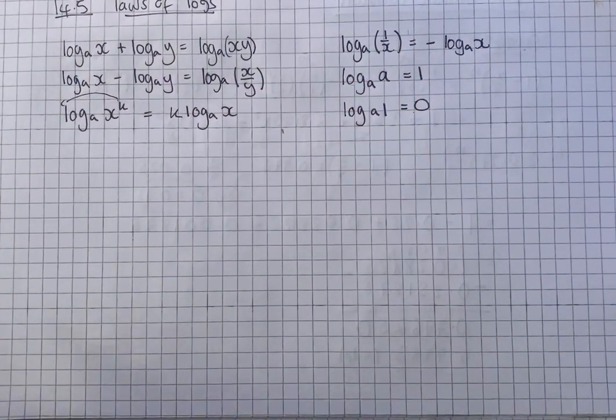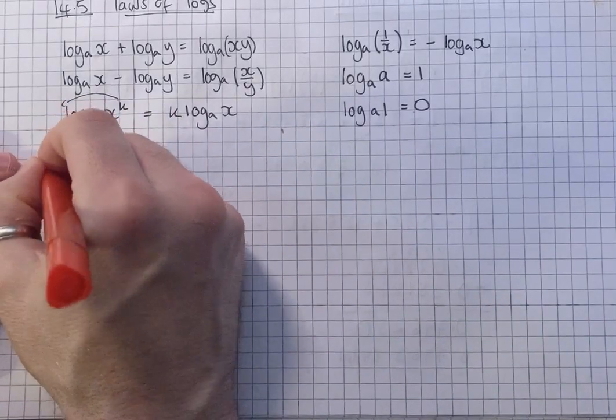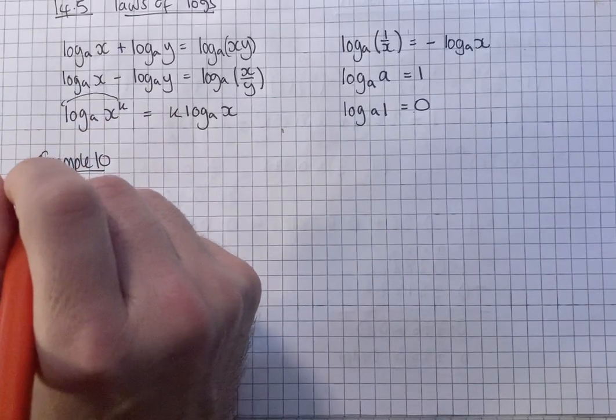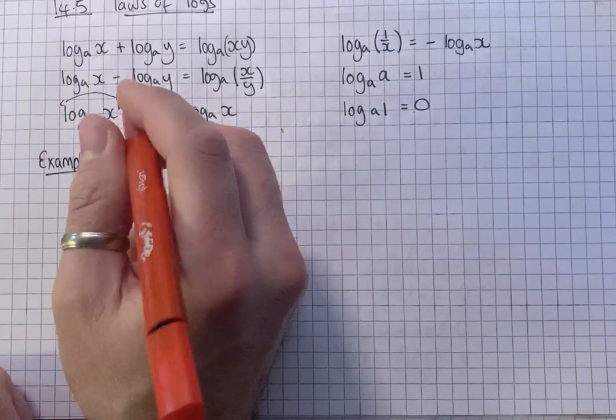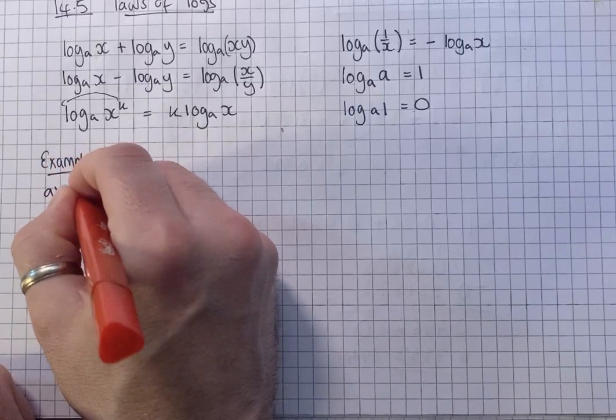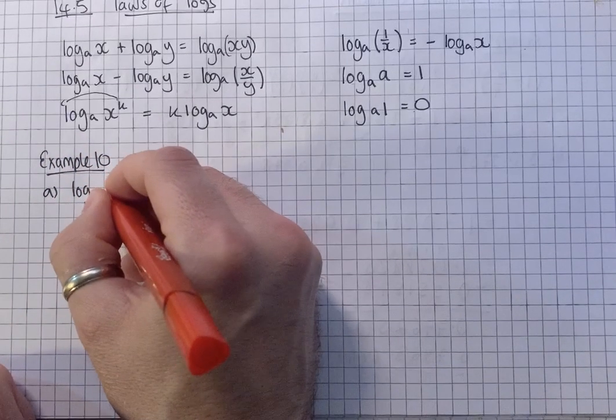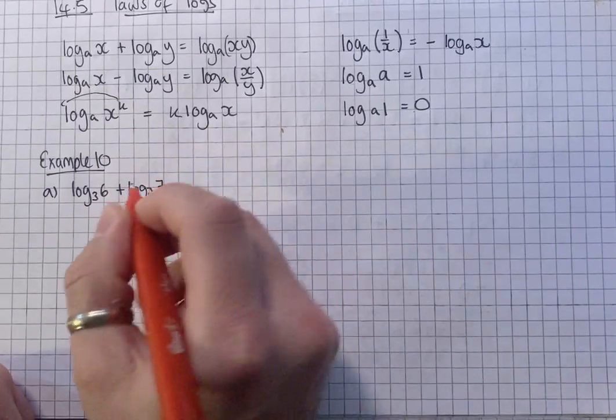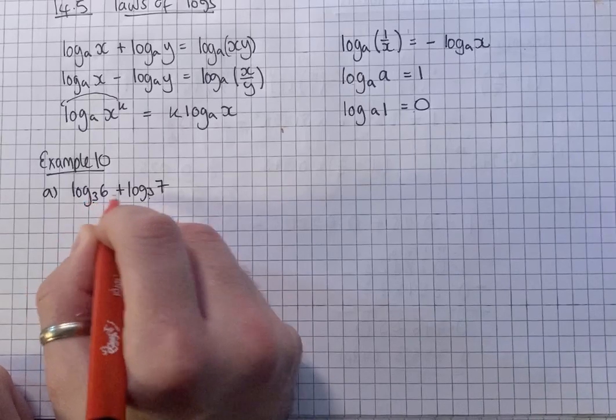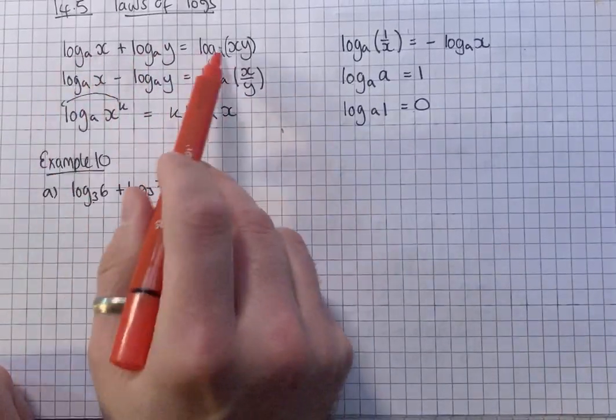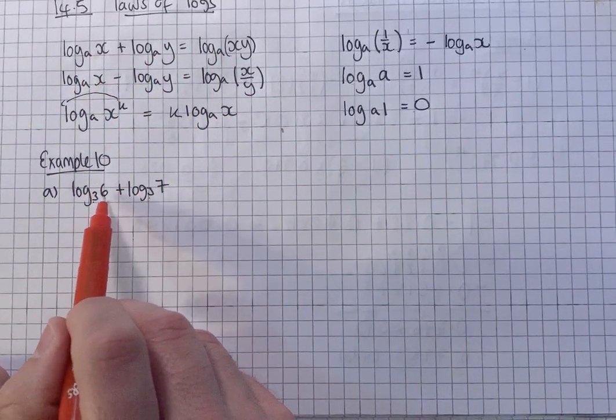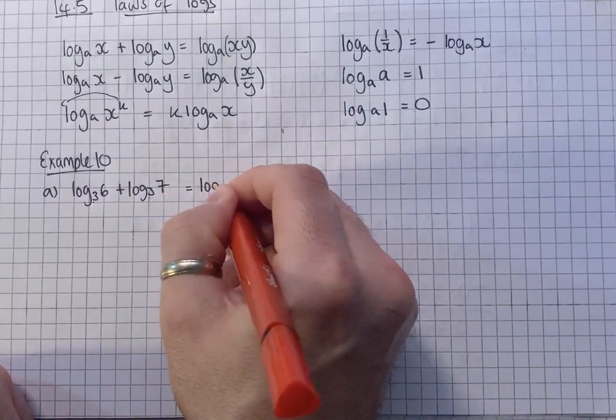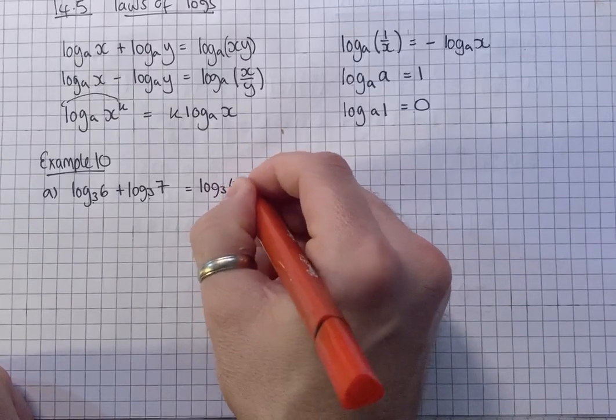Okay, example 10. So, I'm going to use these laws then to simplify some logs into a single logarithm. So we've got log to the base 3 of 6, plus log to the base 3 of 7. Now because we've got the same base, we can use a log rule. When two logs are added, you can just simply multiply these parts. So it's going to be log to the base 3 of 6 times 7, is 42.